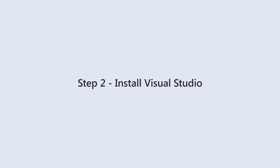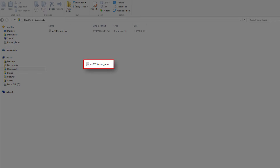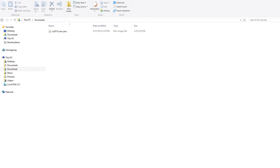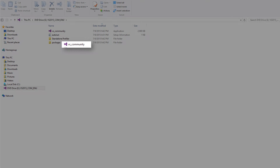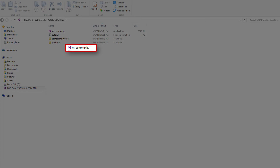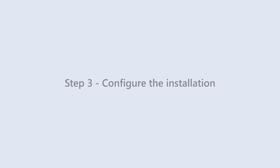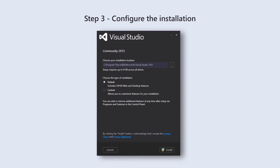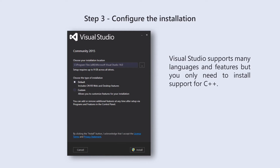Step 2: Install Visual Studio. Open the file in the Download folder, then choose VS_Community. Step 3: Configure the installation. You will soon see a window to configure your Visual Studio installation. Visual Studio supports many languages and features, but you only need to install support for C++. Press Custom.